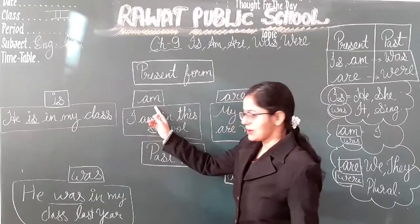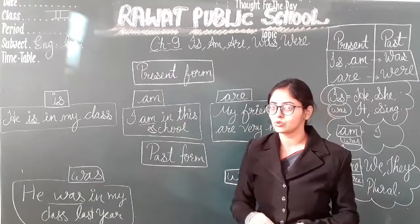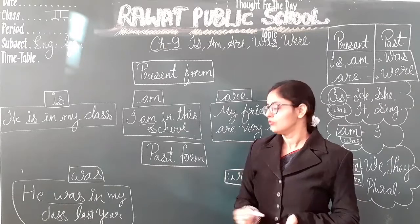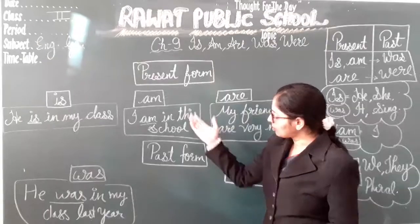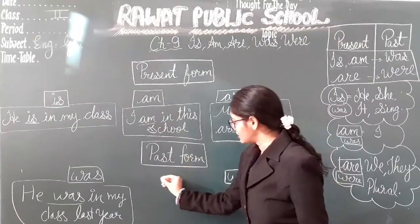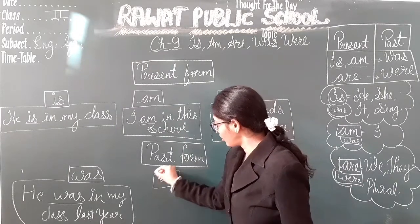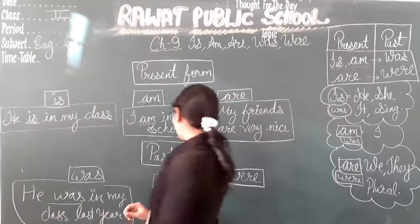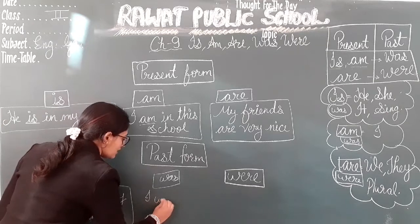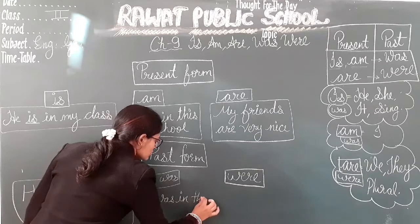The second example is with I. I am in this school — this is the present form, meaning I currently study in this school. Now the past form of am is also was. So if you want to say this in the past, you will write: I was in this school.